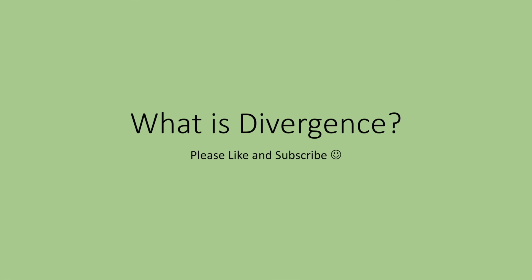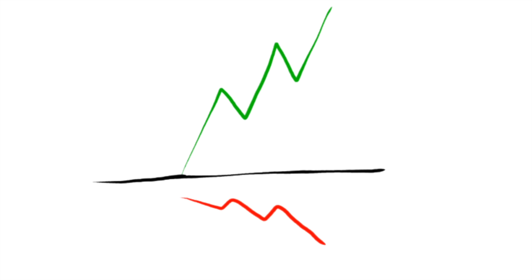Divergence is simply a tool — it's a lesson that indicator traders use. So this is going to be a lesson for indicators. Basically, if you have any sort of indicator that is telling you the market should be going a certain direction, but in reality the market is going the other direction, something is wrong with the market. I prefer to use the relative strength index, but you can also use stochastics and various other oscillators.